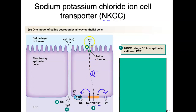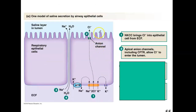In step two, what we need to do is bring that chlorine out the apical end. The apical anion channels, including CFTR, allow that chlorine to enter the lumen. This anion channel is going to allow chlorine to exit the cell. So now I have chlorine in the lumen — because I let it in through the basolateral end and I'm extruding it here through the apical end.